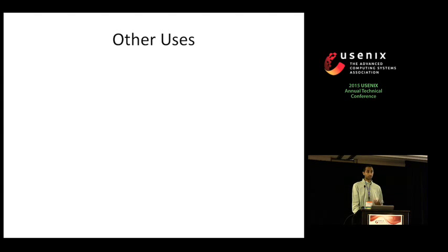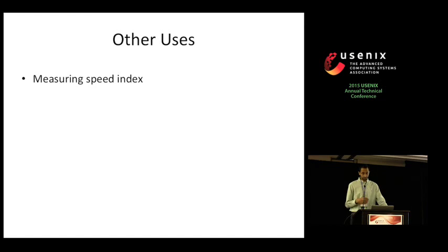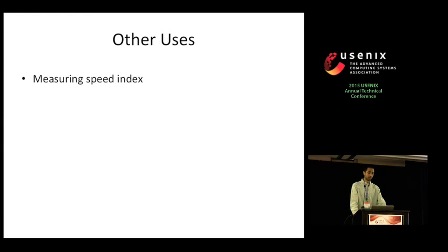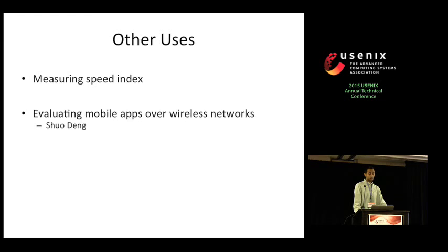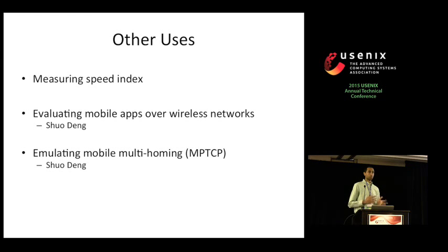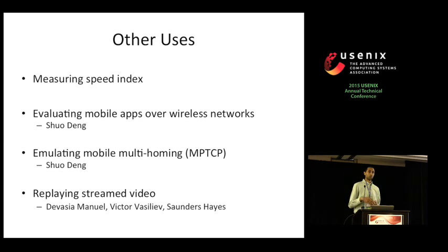MahiMahi has also been used in several other case studies described in the paper. We used it to evaluate multiplexing protocols on a new metric called Speed Index, proposed by Google to measure the visual progress of a web page load — finding similar trends as with page load times. It's also been used to evaluate mobile apps and multi-homing protocols like MPTCP over wireless networks, and MahiMahi has been extended to handle recording and replaying streamed video.